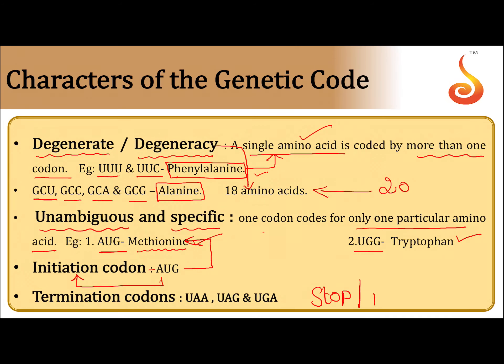The termination codons are UAA, UAG, and UGA. When any one of these three appears during protein synthesis, protein synthesis automatically stops. For this reason, we call them termination codons.